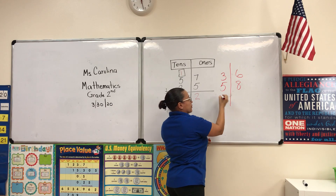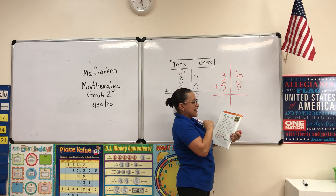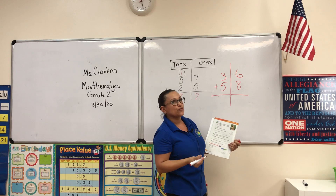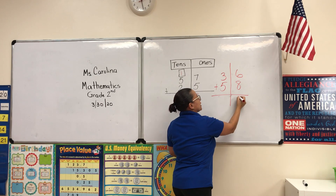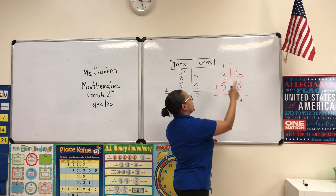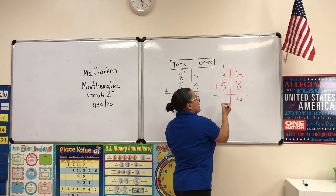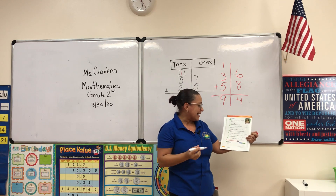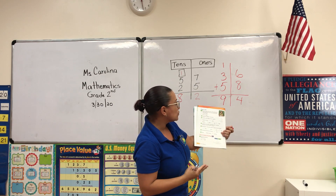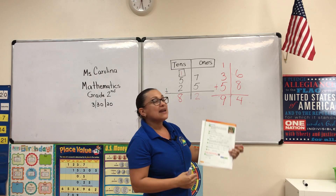Remember which column is your tens and which is your ones. Add the ones first: 6 plus 8 equals 14. The 4 stays in the ones and the 1 goes into the tens. Now add the tens: 3 plus 1 plus 5 equals 9. The answer is 94 — 9 tens, 94.